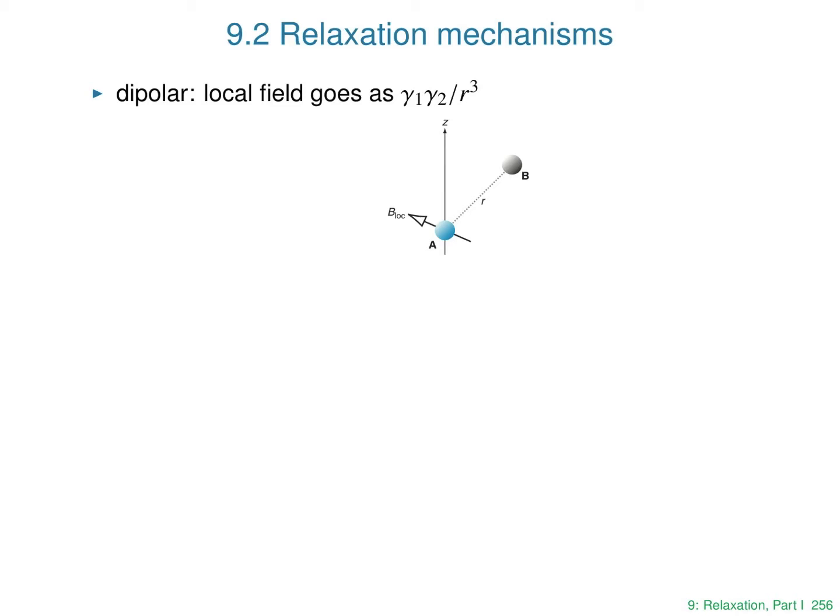The next thing we need to worry about is where do these random fields come from? One of them is the dipolar field, where the field generated by one spin is experienced by the nucleus we're interested in — usually called the dipolar interaction. It varies as 1 over R cubed, the distance between the two nuclei. It also varies as the product of the gammas of the two nuclei involved. So this is strong for protons and much weaker for nitrogen-15 because of the gammas. It drops off very quickly with distance because of this R cubed, but it's the dominant source of relaxation for protons in a sample.